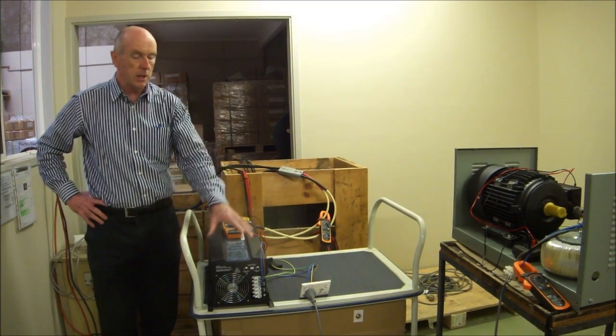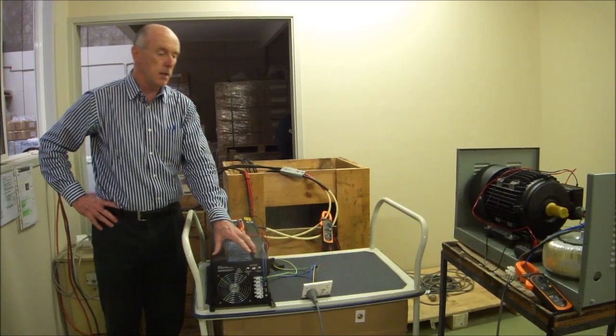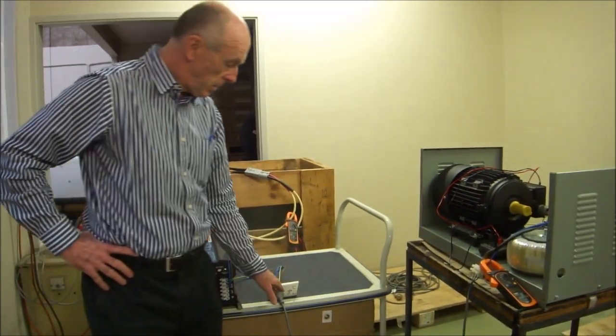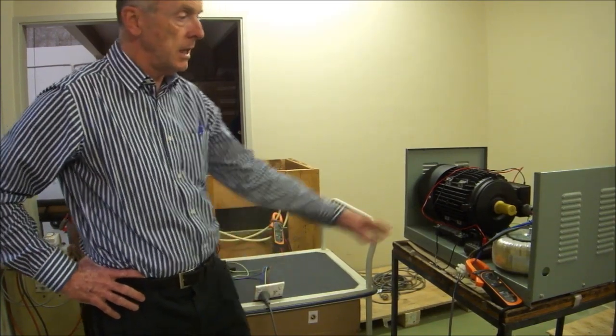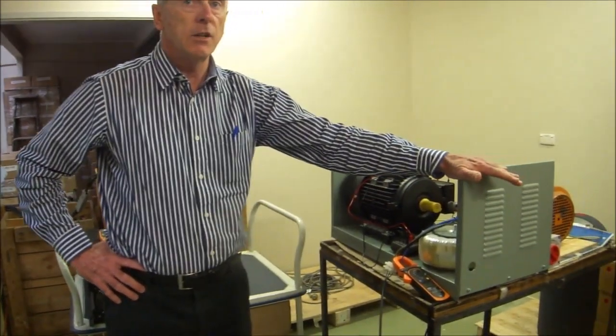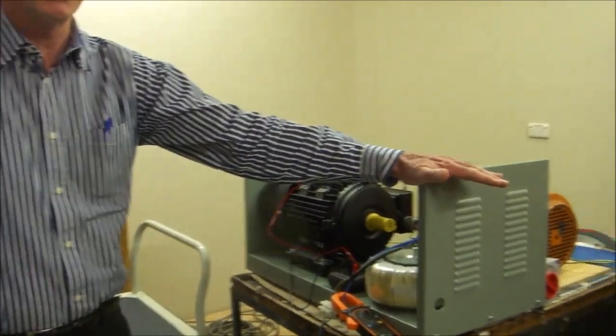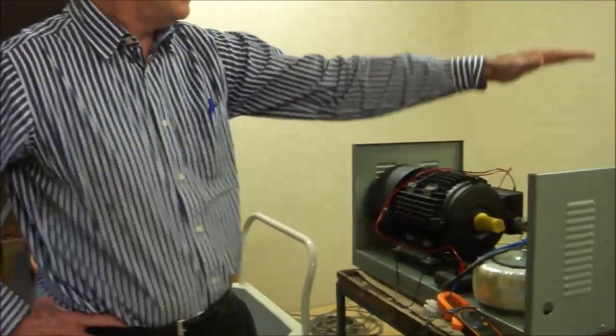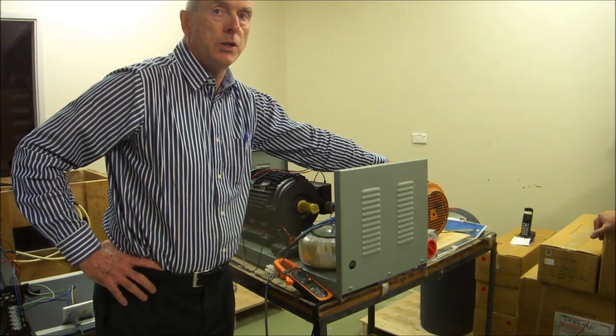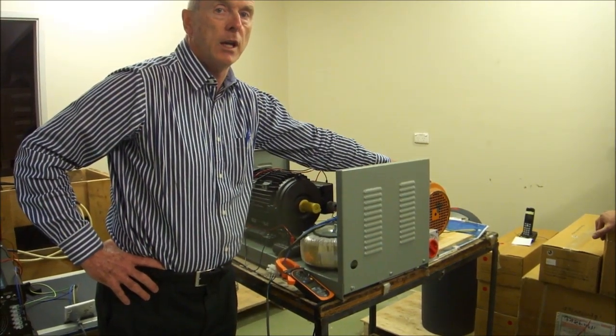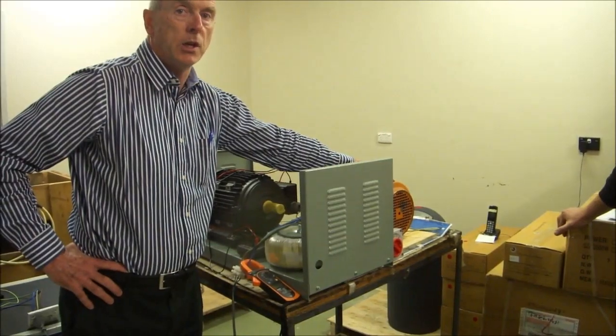So we take 24 volts DC and produce 240 volts AC. We then feed the AC, the single-phase AC, and we feed it into a single-phase to three-phase converter, which is here. And then over here, we then energize a load motor, which is a four kilowatt motor, which we will energize at no load.